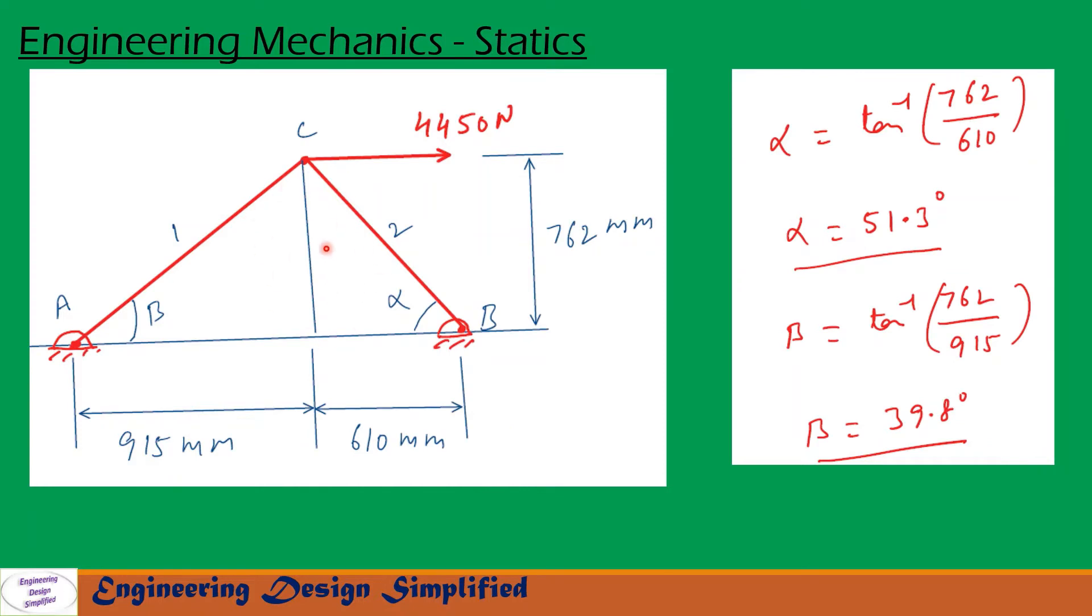Here we can form two right angle triangles by drawing a vertical line from C onto this fixed link onto this ground. So let us see this right angle triangle. Tan alpha can be written as tan alpha equals 762 by 610, so alpha can be written as 51.3 degrees.